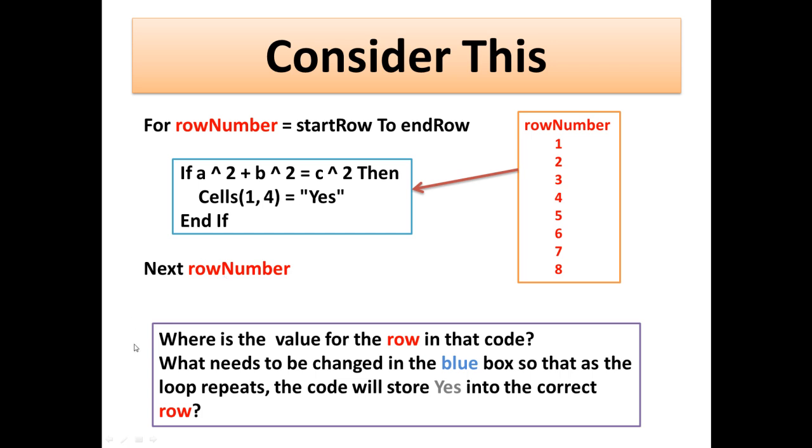So a couple of questions would need to be asked. Where in this code here, where is the value for the row in that code? You look around and you say to yourself, where is the value for the row that I might currently be on in my spreadsheet? Well, we know the row number is referring to the numbers 1, 2, 3, and 4. But where in our code are we actually referring to a particular row on the sheet?